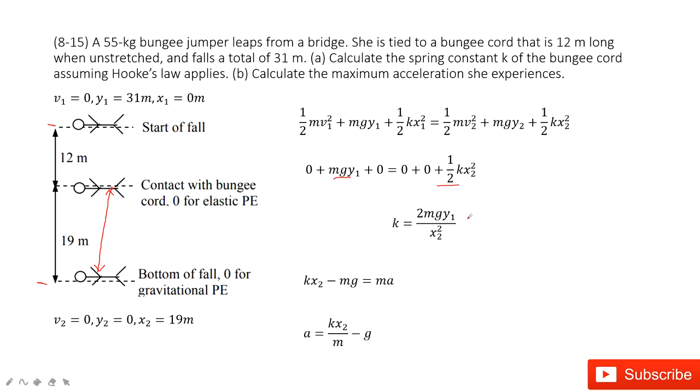And then very easily we can find k. You can see it's 2mgy1 divided by x2 squared. And the mass is given, y1 is given, x2 is given. So very easily you can find k.